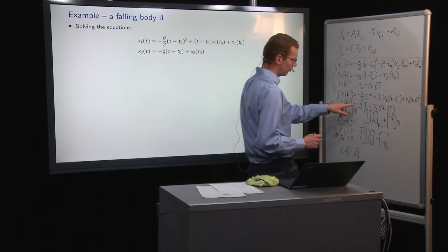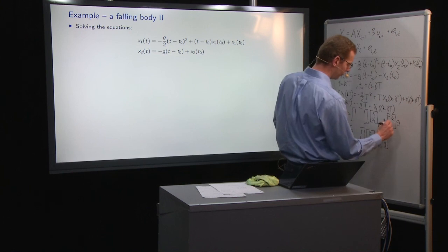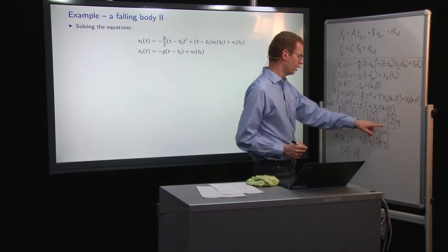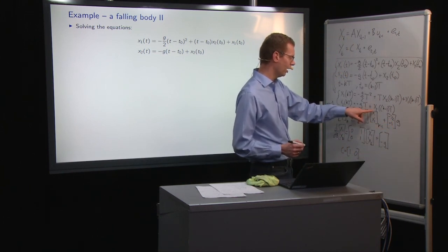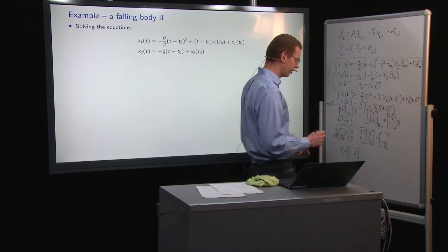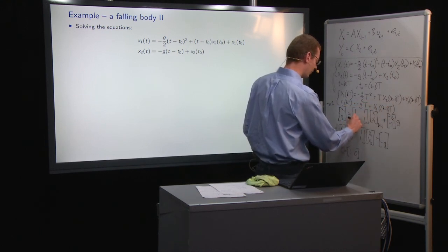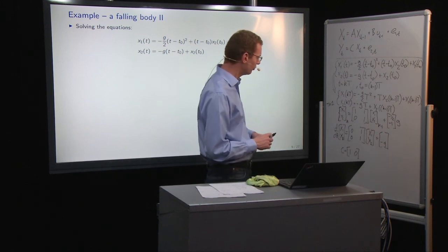Now for the velocity equation, we have a minus g, so that's minus one out here times g as a constant part. And then we have what was the previous velocity here, no dependence on the previous position.